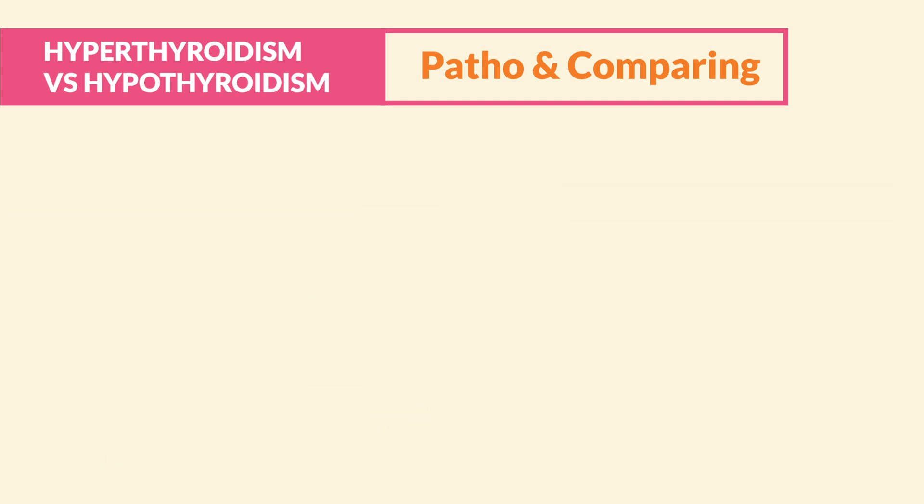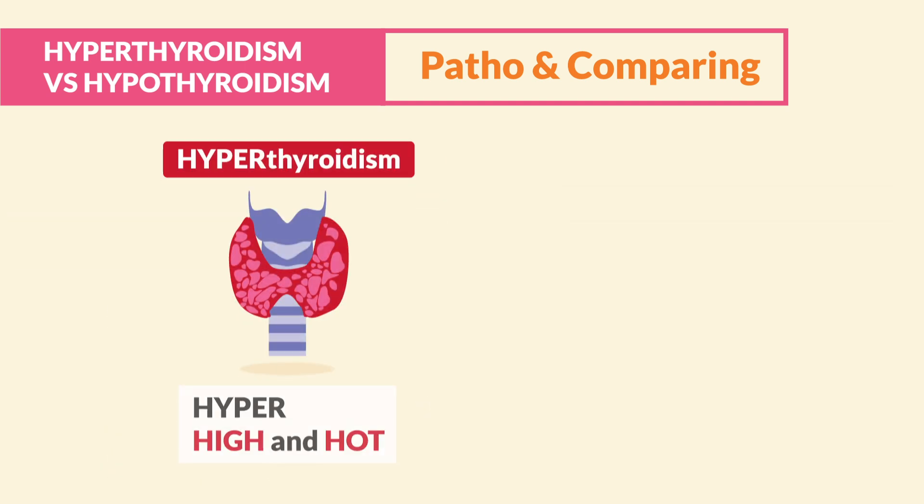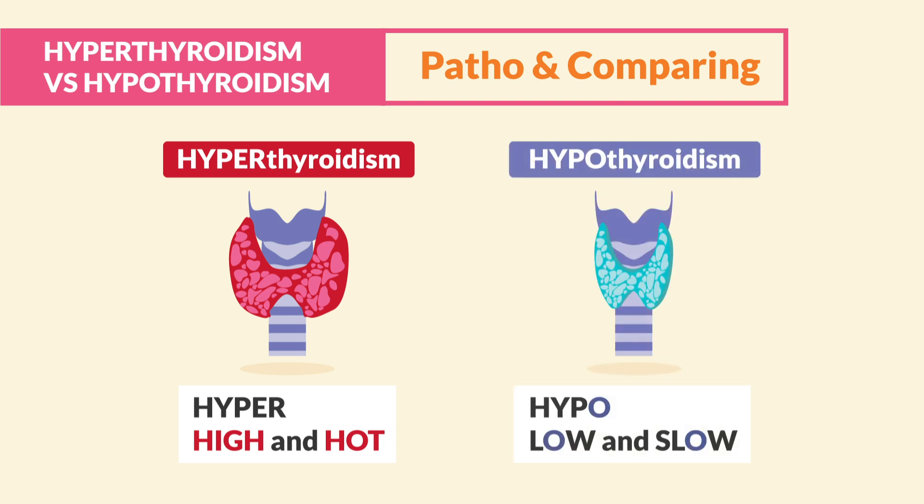Moving on to signs and symptoms: everything that is hyper will be high and hot, and everything that is hypo will be low and slow.